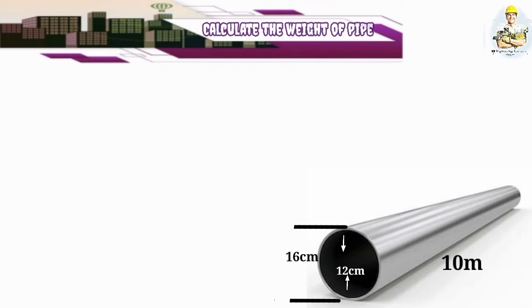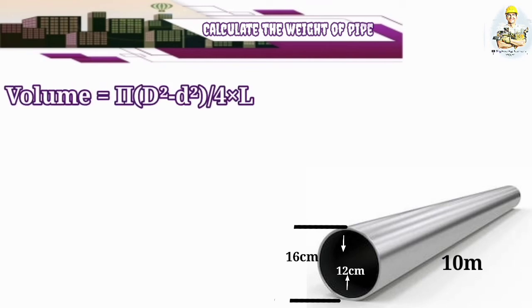First of all, we should find the volume of the given pipe. So the volume is equal to π(D²-d²)/4×L. Here the capital D is representing the external diameter and the small d is representing the internal diameter. So the external diameter squared minus the internal diameter squared divided by four multiplied by length. So you can get the volume of the given pipe.